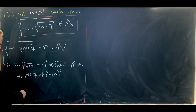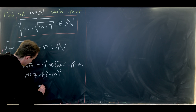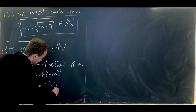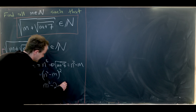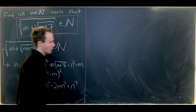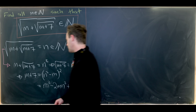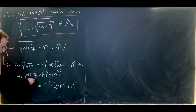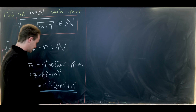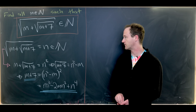Now we can multiply this out. We'll get m squared, then minus 2mn squared, and then finally plus n to the fourth. So let's underline that in blue: we have this equation m plus 7 equals m squared minus 2mn squared plus n to the fourth.